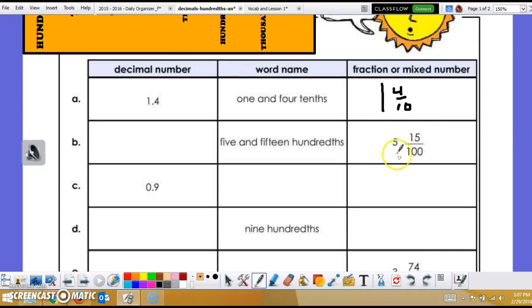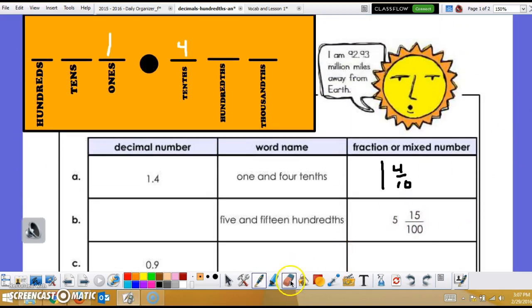So in the case of this one, we have a fraction five and fifteen hundredths. And again, if I place that into my place value chart, it's going to be somewhat easy. I first take my whole number five and I put it in the ones. Then I read the rest of the number. It's fifteen hundredths, so it's going to be five point one five. So your answer for number two to fill in this space would be five and fifteen hundredths.